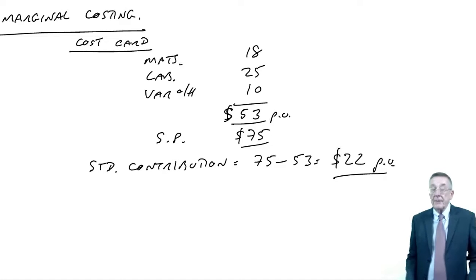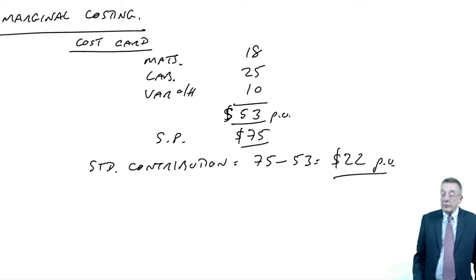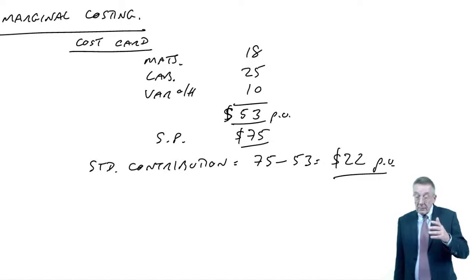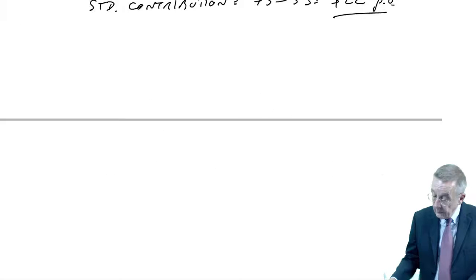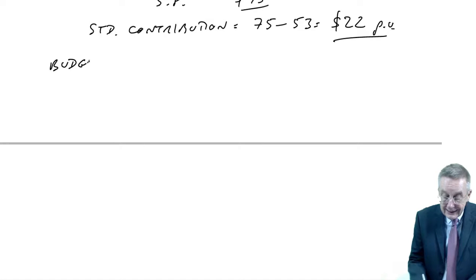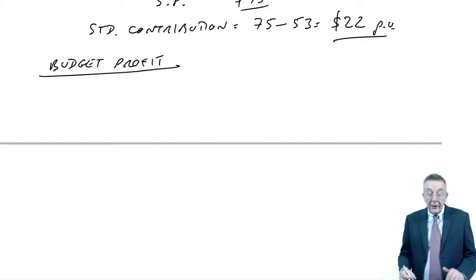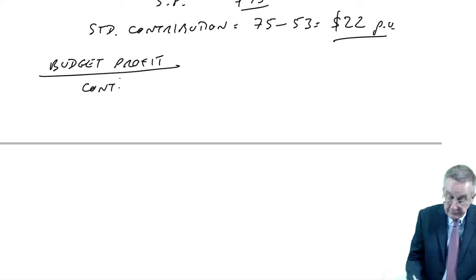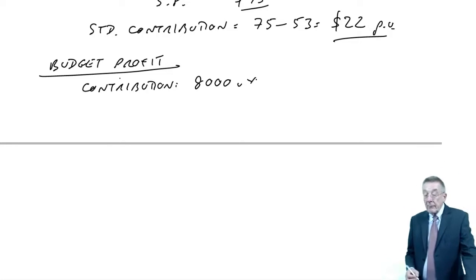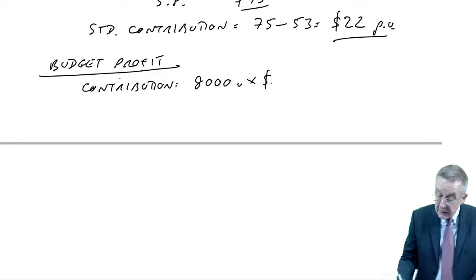We've spent enough time in earlier lectures discussing contribution, the profit before fixed overheads. Before we do our operating statement, just calculate the total budget profit. The budget contribution, we are budgeting on selling 8,000 units, and the contributions should be $22 a unit, $176,000.